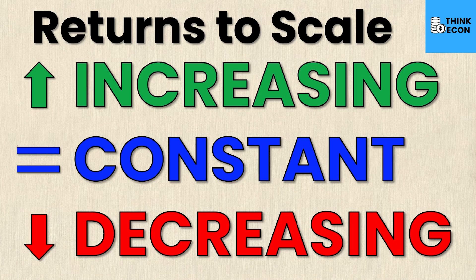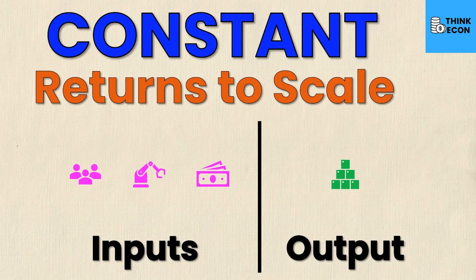In economics there are three types of returns to scale, and this looks at the amount of inputs relative or proportional to the number of outputs that a firm can produce. There are increasing returns to scale, constant returns to scale, and finally decreasing returns to scale. In this video we're going to cover what all three of them are, starting with constant returns to scale.